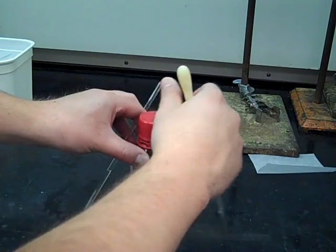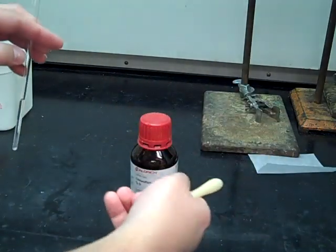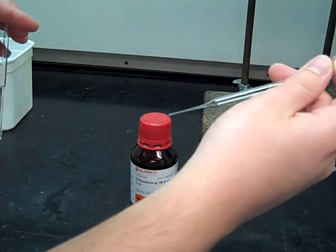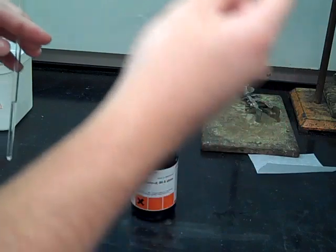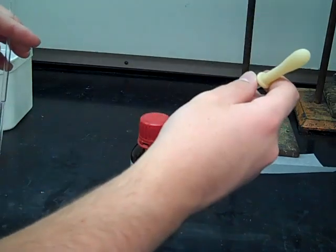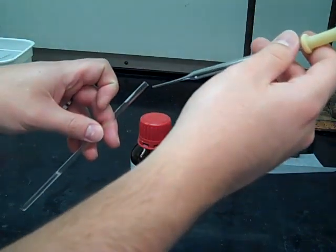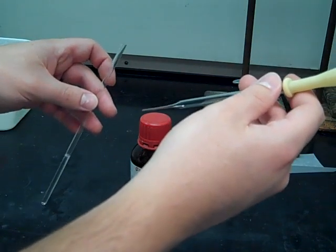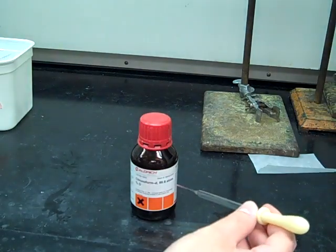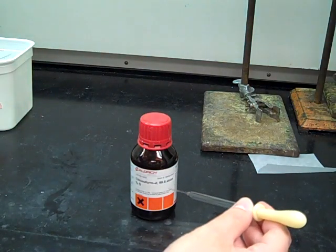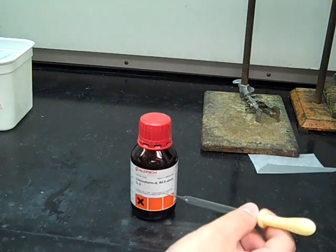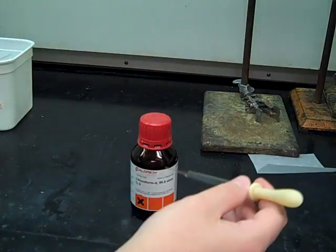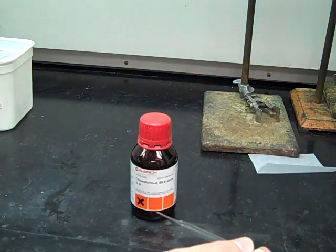One thing that you want to be really important of is not to contaminate this deuterated chloroform. So once you've used a pipette, you want to make sure to dispose of that in the pipette waste and don't try to put the same pipette in again, especially if you've touched the lip of your NMR tube where it could be contaminated with whatever sample you're studying. This NMR solvent is really expensive and if it gets contaminated, we're out the 75, 50 bucks that it costs to get this solvent. So make sure that you're just extra careful about contaminating that chloroform solvent.